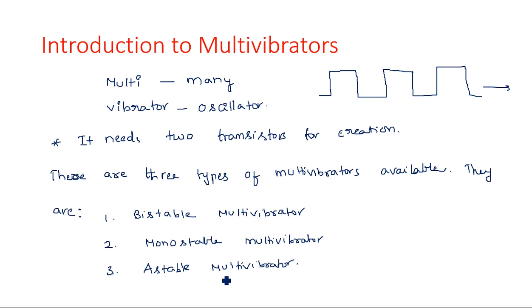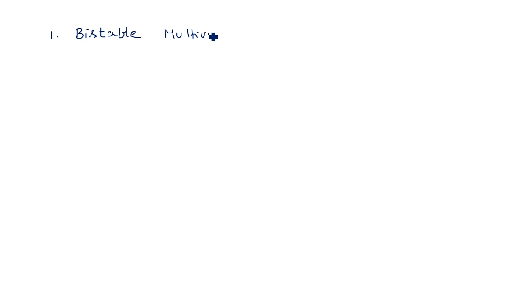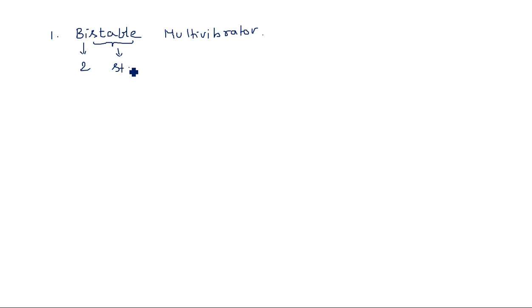Let us see briefly about these three multivibrators. Looking at the names — bistable, monostable, and astable — they each relate to stable states in the output. In the bistable multivibrator, 'bi' means two, and 'stable' means it has two stable states.